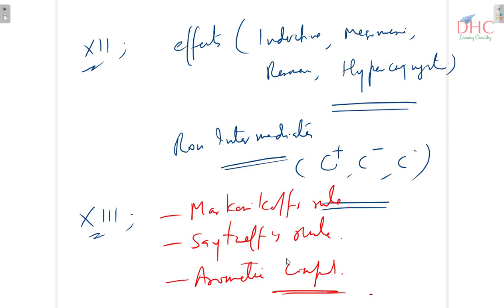Reaction intermediates — carbocations, carbenes, and free radicals. And lastly, in the hydrocarbon chapter, you have to study Markovnikov's rule for HBr addition to alkenes, Saytzeff's rule for the formation of alkenes, and aromatic compounds — that is benzene.